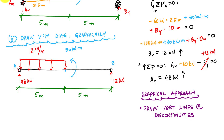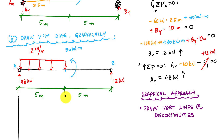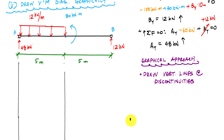In this example problem, at point A I have a concentrated force — support reaction of 48 kilonewtons — and the beginning of a distributed load, so I'm going to draw a vertical line there. At five meters where the blue dot is, I have the end of a distributed load and a concentrated moment, so I draw a vertical line there. And at point B I have another concentrated force or the end of the member, so I draw a vertical line there.